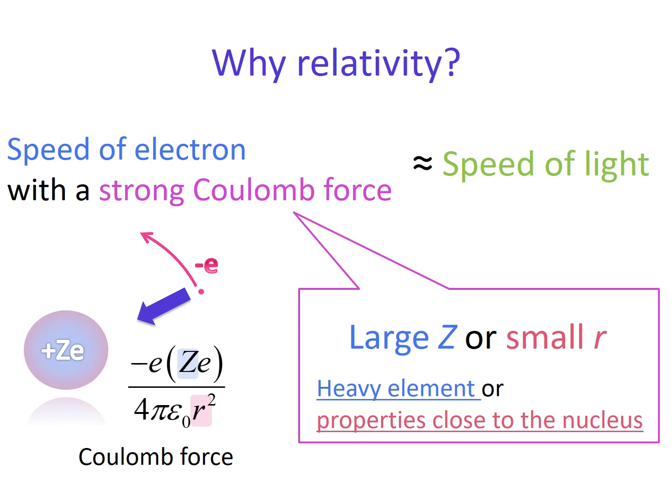Then, why relativity? This is because the speed of electron with a strong coulomb force is close to the speed of light in order not to attach to the nucleus. This is the nucleus with atomic number Z, and this is an electron. And the coulomb force between them is described as multiplication of two charges, minus e times Z e, over the square of distance r.